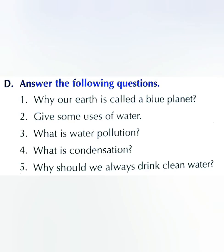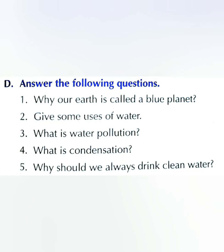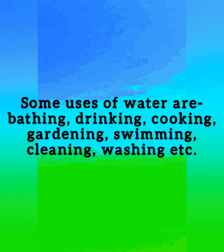So children, let's answer the following questions. Question number one: why is our earth called a blue planet? Our earth is called a blue planet because three-fourths of its surface is covered with water. Question number two: give some uses of water. Some uses of water are bathing, drinking, cooking, gardening, swimming, cleaning, washing, etc.